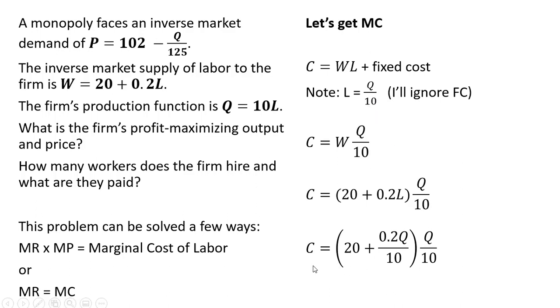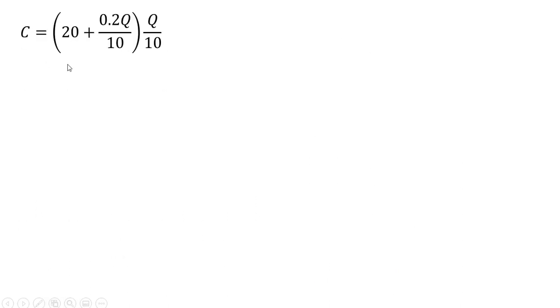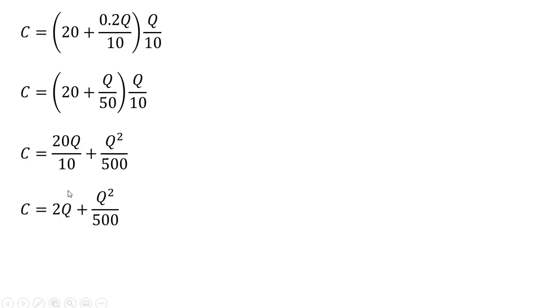So now we have a cost here. The firm's total cost is a function of quantity. Let's simplify this a little bit, though, on the right-hand side. Just rewriting and now simplifying. This 0.2 divided by 10 is just 1 over 50. And then multiplying this Q divided by 10 throughout the parentheses and simplifying, that is our total cost equation.